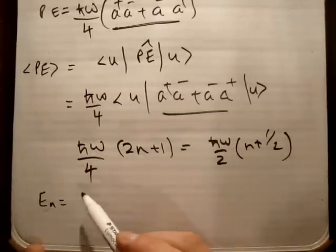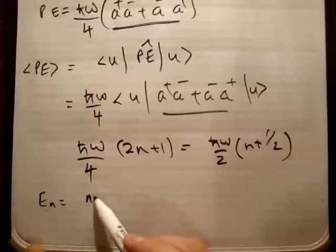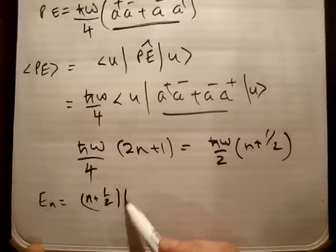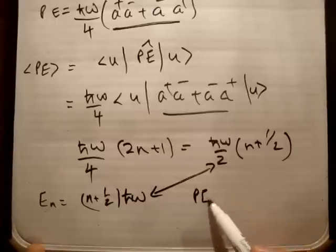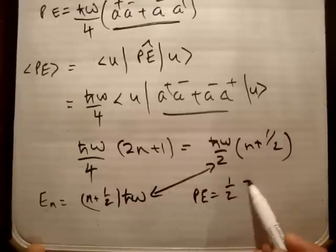that we know the energy in our system is equal to n plus 1 half h bar omega. So comparing this and this, we realize that the potential energy is equal to 1 half of the energy of the system.